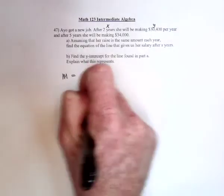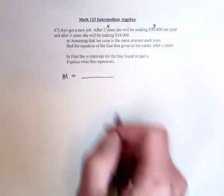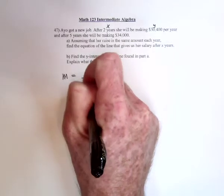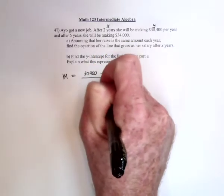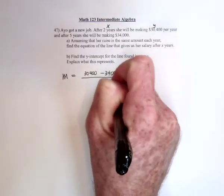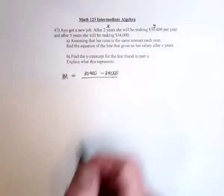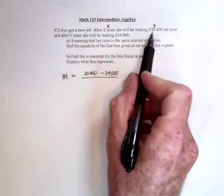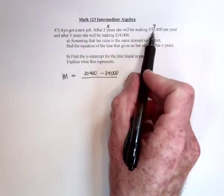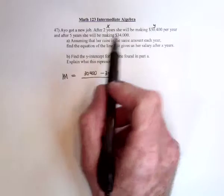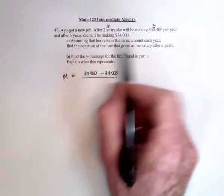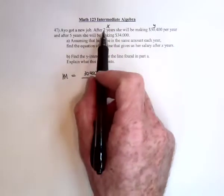So when we subtract y2 minus y1, that's going to be the dollars. 30,400 minus 34,000, and then the years are the x's. So now when I subtracted, I did this one first. I did 30,000 minus this. I have to be consistent. 2 minus 5. So the top one minus the bottom, the top one minus the bottom.